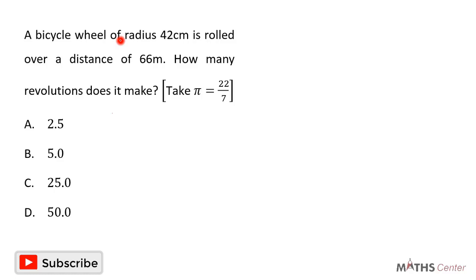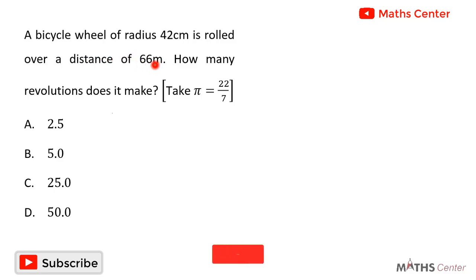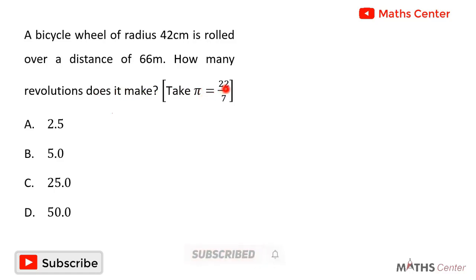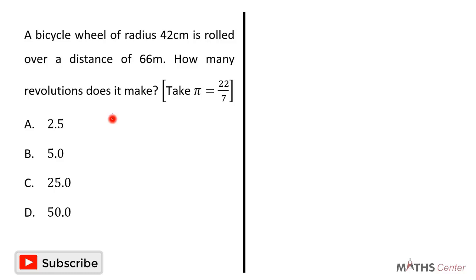A bicycle wheel of radius 42 centimeters is rolled over a distance of 66 meters. How many revolutions does it make? Take pi as 22 divided by 7. This is a multiple choice question and so we'll solve the question and after that we'll pick the correct option. When a circle is rolled over a distance, the number of revolutions it makes will be given by the distance covered divided by the circumference of the circle.